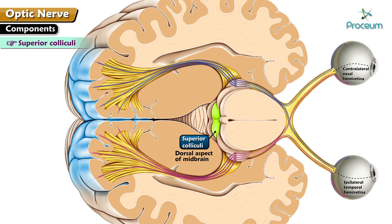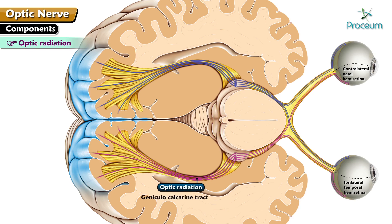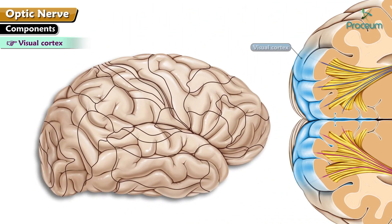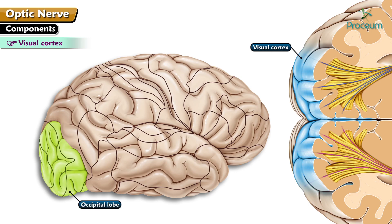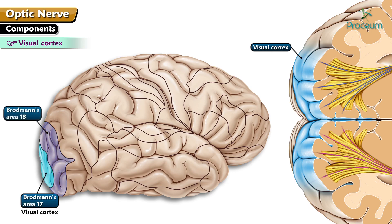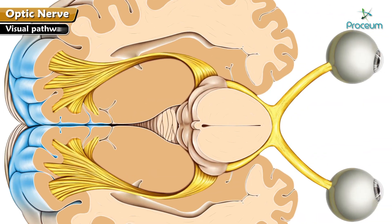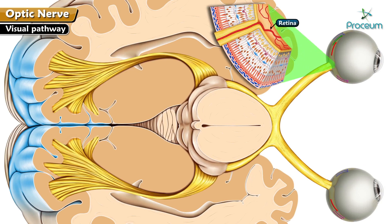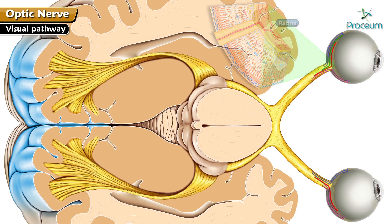The superior colliculi are a pair of elevations in the dorsal aspect of the midbrain. The optic radiation arises from the geniculo-calcarine tract. The visual cortex is situated in the occipital lobe and is located on the banks of the calcarine fissure. The area concerned with the integration of vision is Brodmann's area 17. The neighboring areas 18 and 19 are the visual association areas.